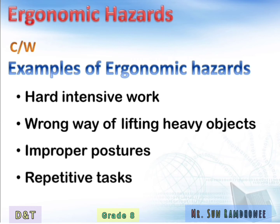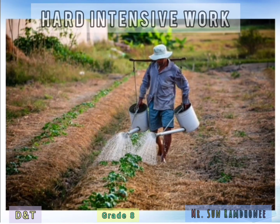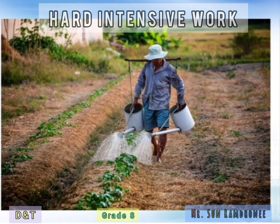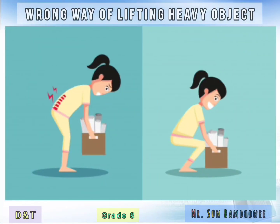We are now going to look at different examples. From the picture, we can see a farmer watering his vegetables. This person has to carry heavy water cans to and fro to irrigate his farm. This is an example of improper and proper posture. If we lift heavy objects in the wrong way, we are going to suffer from severe back pain, so we have to maintain proper posture when lifting heavy objects.